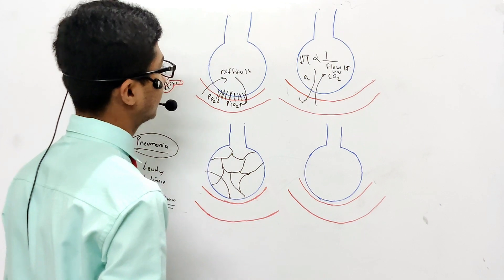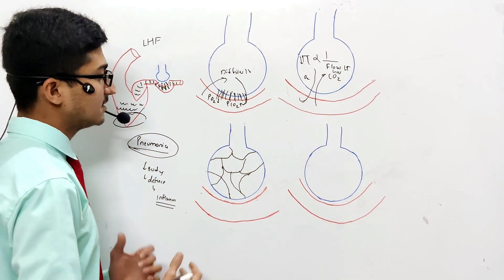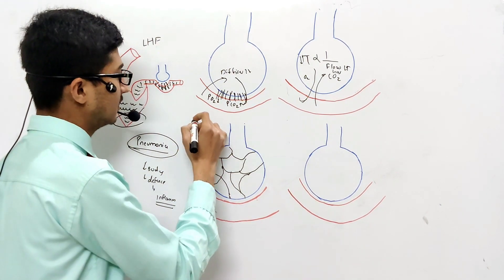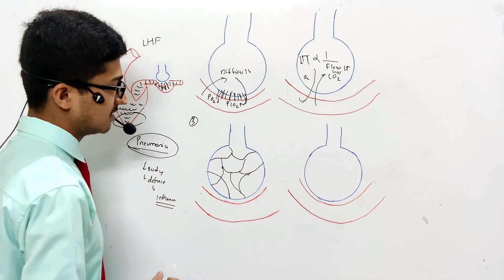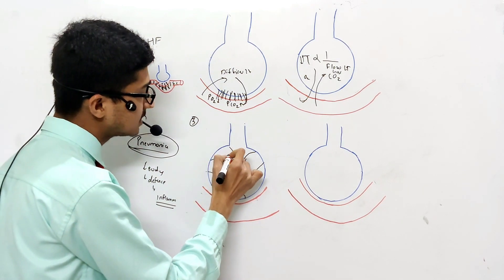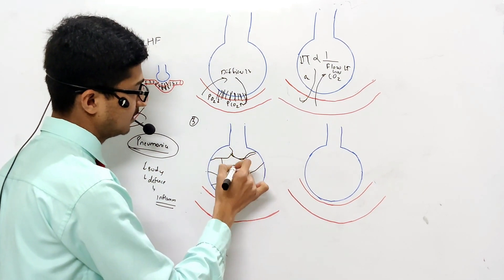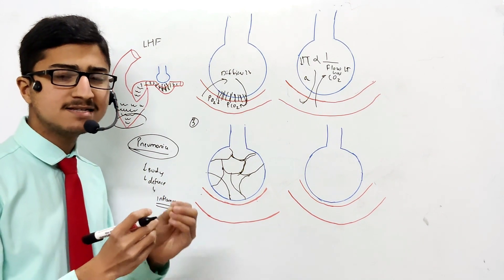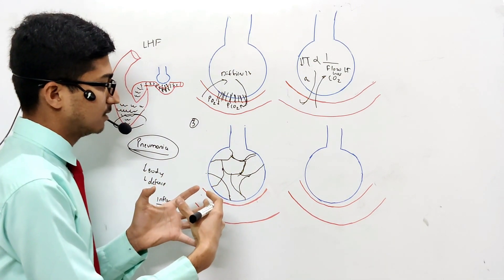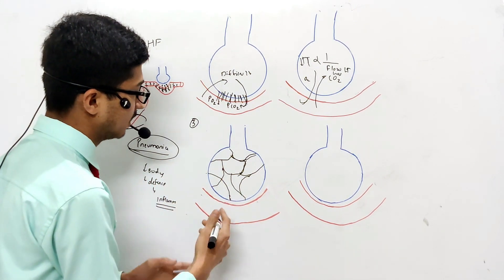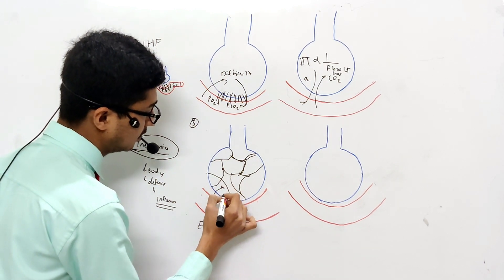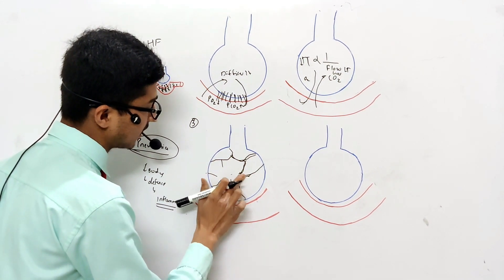Now let's take another condition where the surface area decreases. The alveoli are highly accommodated by elastic fibers, and these elastic fibers are arranged in such a manner that they give more surface area for gaseous exchange.